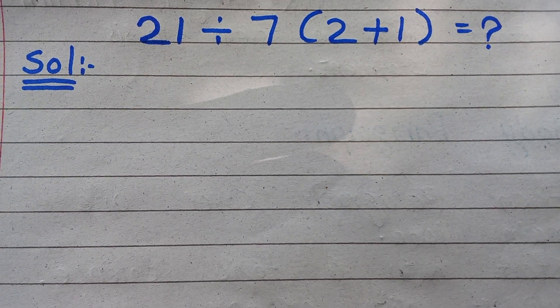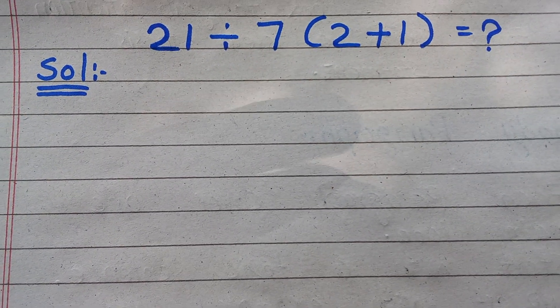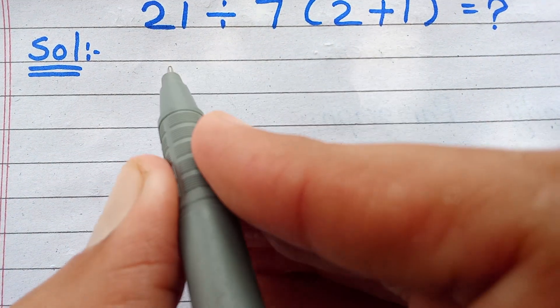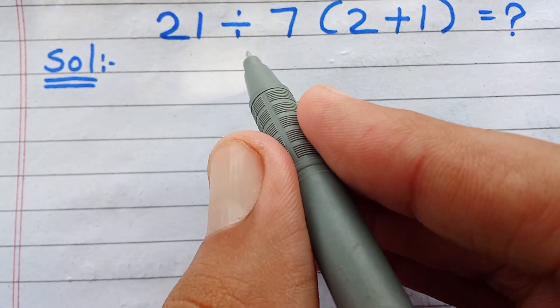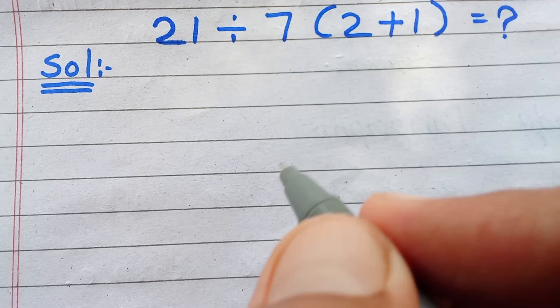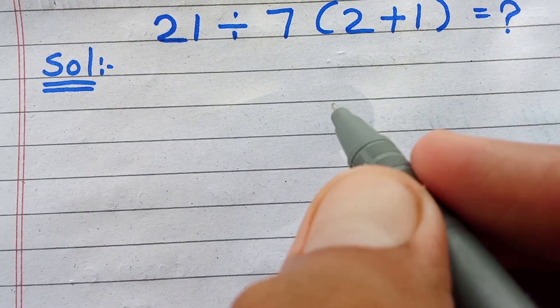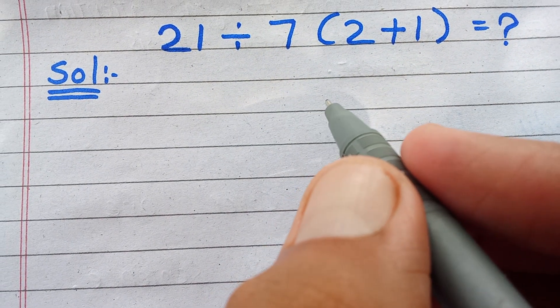Hello guys, welcome to Raza Learning Hub. In this video, we will find the value of this difficult problem, which is 21 divided by 7 times (2+1). So how can we find the value of this expression?